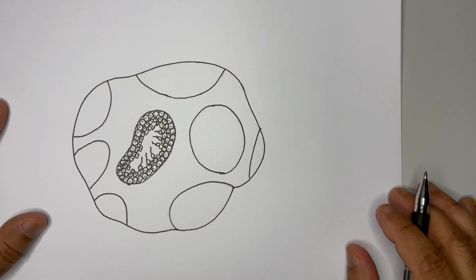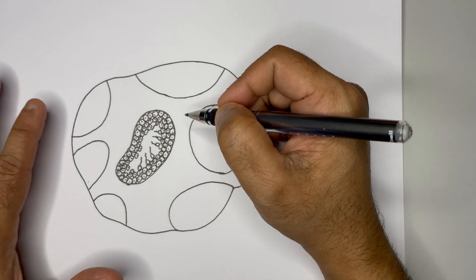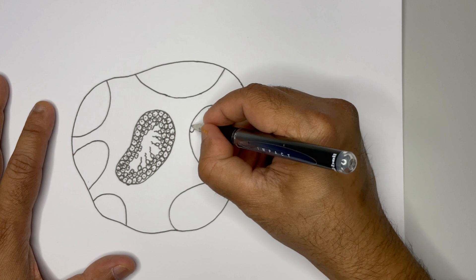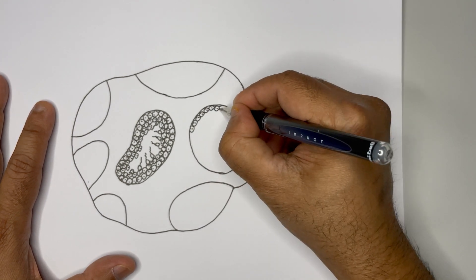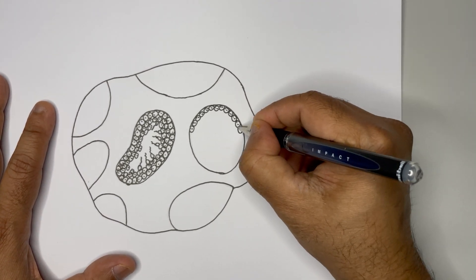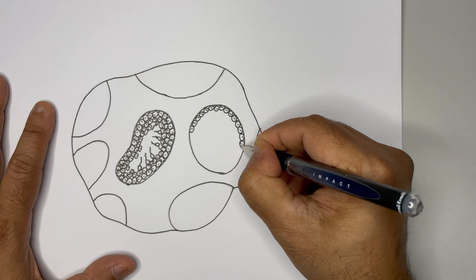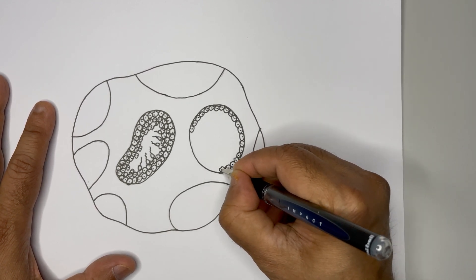One seminiferous tubule is covered. Now we have to do the same with other tubules also. You will feel like sometime you are taking time for this, but at the end your work will look very beautiful and I'm sure your examiner will be so much impressed with your diagram.